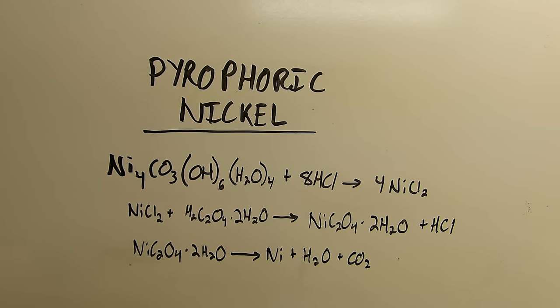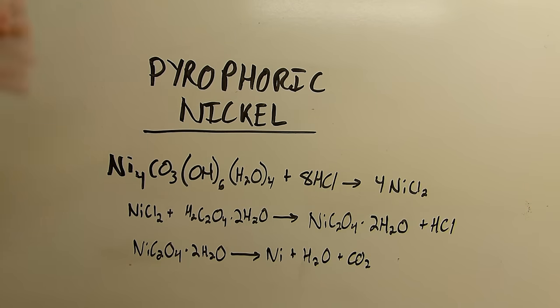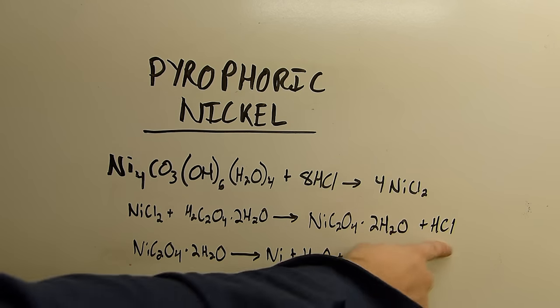It's quite an affair but if I add hydrochloric acid to it I'll end up with four nickel chloride in solution along with some carbon dioxide and water. The nickel chloride can then react with oxalic acid dihydrate which I will add as a solution to form nickel oxalate dihydrate which will precipitate from the solution since it's not very soluble in water and some hydrochloric acid.